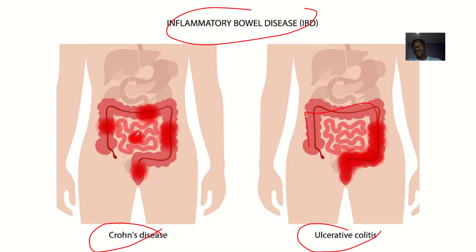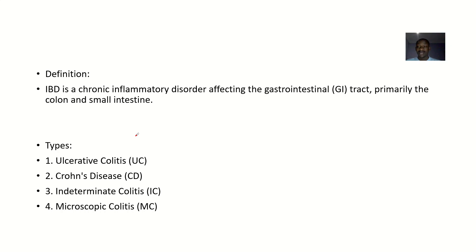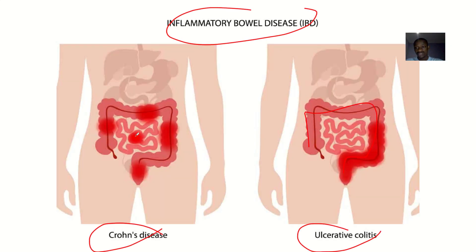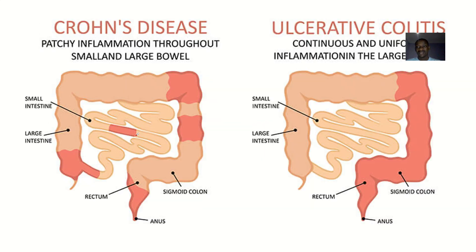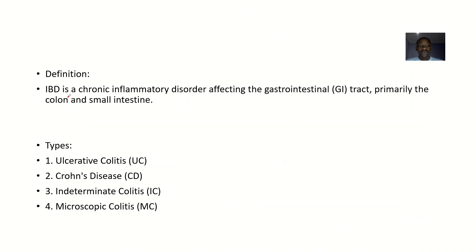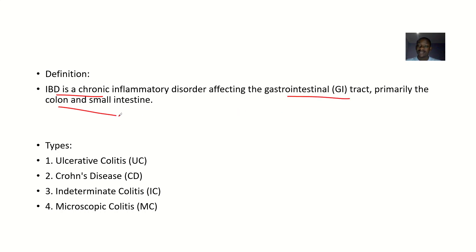Crohn's disease can be an inflammation of either the large intestine or the small intestine. So apart from these two common types, we have some other types too. IBD — that's inflammatory bowel disease — is a chronic inflammatory disorder. For a disease to become inflammatory bowel disease affecting a lot of the colon or the bowel, the disease must have been there for a very long time. It is a disorder affecting the gastrointestinal tract, primarily the colon and the small intestine.